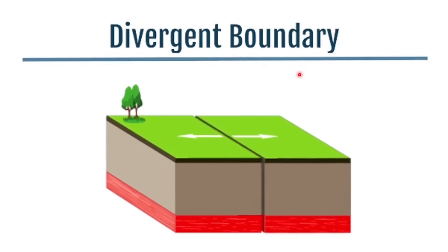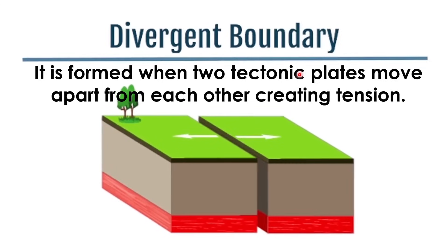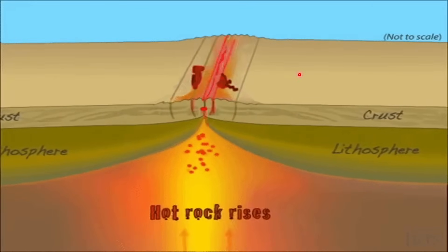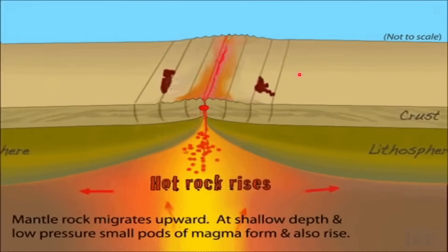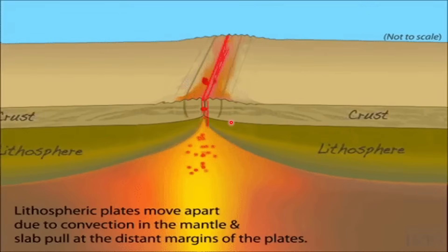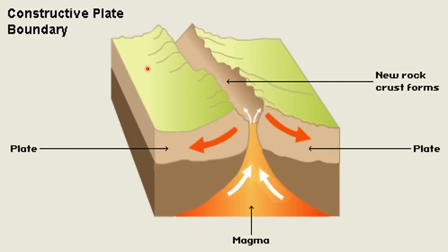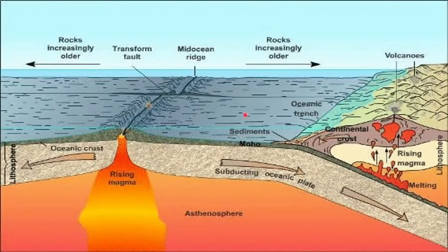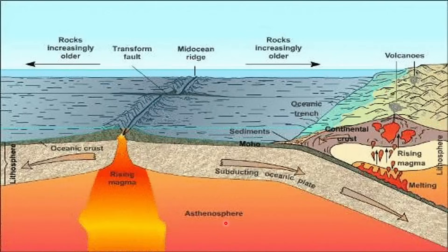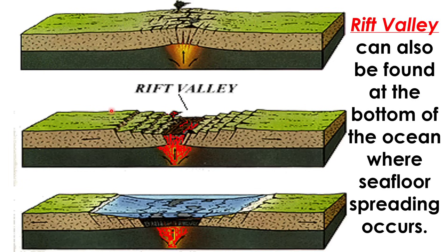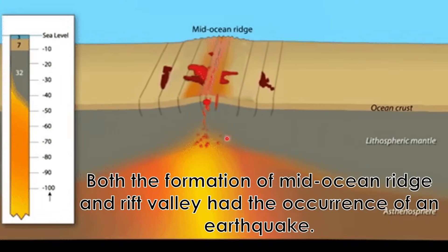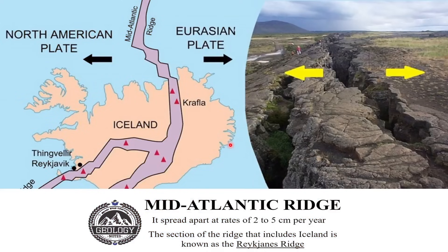Divergent boundary is formed when two tectonic plates move apart from each other, creating tension. This movement creates new crust as magma rises from the mantle to solidify at the surface. The earth's surface is cool enough to solidify the magma that rose, thus creating new oceanic crust or seafloor. A divergent boundary is also called a constructive boundary. The mid-ocean ridge is formed by divergence between oceanic plates, while rift valleys form between continental plates. Both the formation of the mid-ocean ridge and rift valley involve the occurrence of earthquakes. An example is the Mid-Atlantic Ridge, where the Eurasian plate and the North American plate are moving apart, forming new oceanic crust.